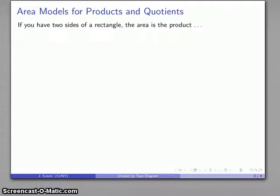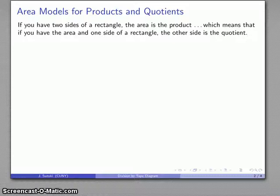So let's consider that again. Remember what the area model for products and quotients looks like. If I have two sides of a rectangle, the area is the product. And because of the relationship between multiplication and division, what that means is if I have an area and one side, the other side is going to represent the quotient.